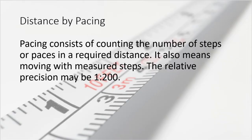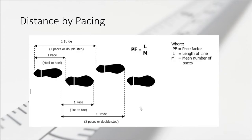When we say pacing, we are actually counting the number of steps. One step is one pace. Looking at the figure, pacing can be measured — the distance should be the same. That's one pace. Two paces is equal to one stride.